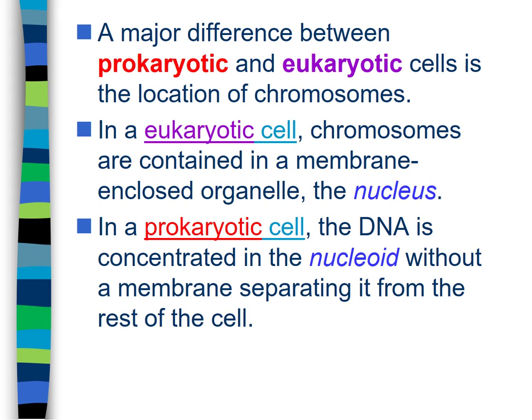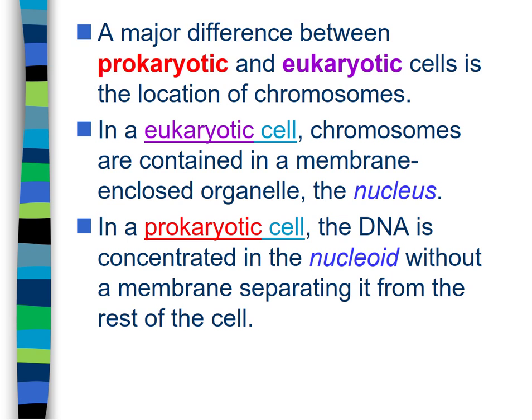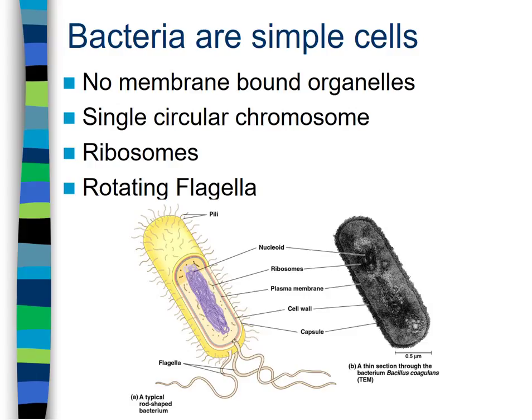In the eukaryotic cell, chromosomes are contained within a nucleus, which helps protect that 'million dollar blueprint.' Bacterial cells are simple and extremely small — no membrane-bound organelles, a single circular chromosome, ribosomes, cytoplasm, a plasma membrane, and a cell wall.